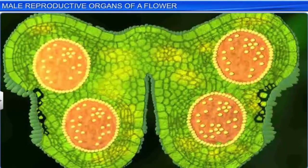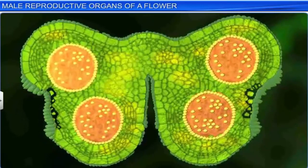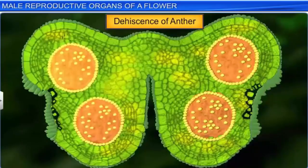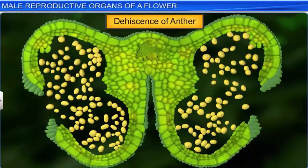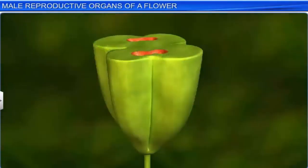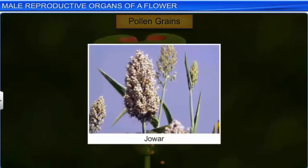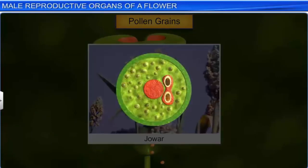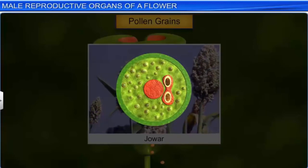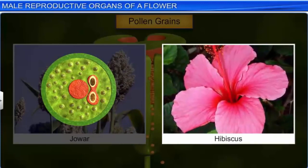After the formation of pollen grains, the endothecial cells lose water, which leads to tension in their cell walls. This tension causes the dehiscence or bursting of the anther along the line of dehiscence, and results in the shedding of several thousand pollen grains. In cereals such as jowar, the pollen grains are shed at the three-celled stage, whereas in 60% of angiosperms — which include plants such as hibiscus — the pollen grains are shed at the two-celled stage.